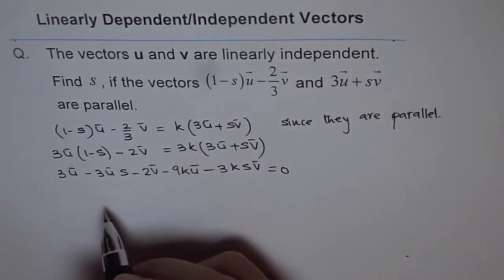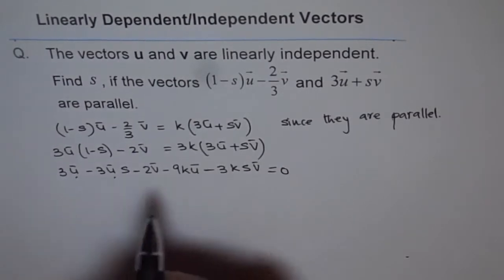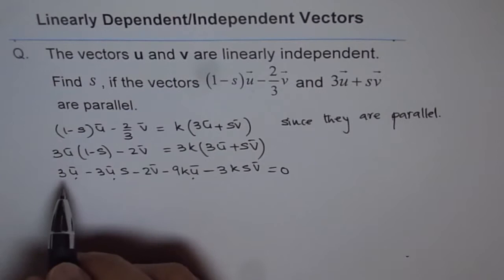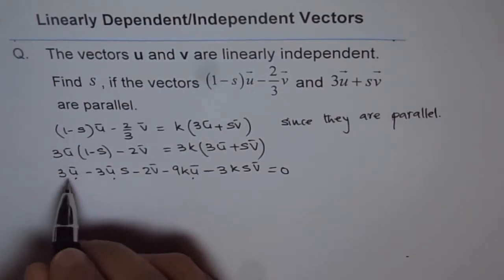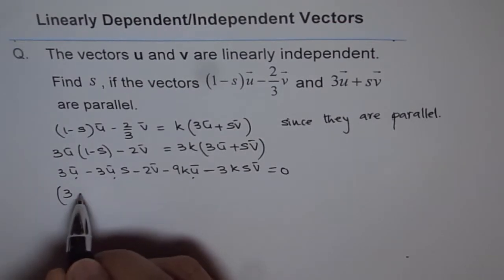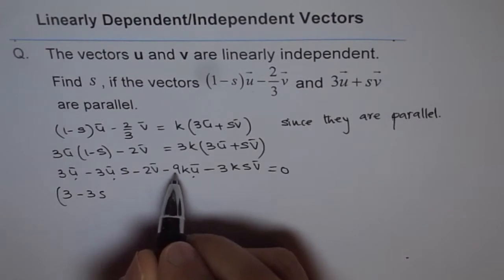And now, we can combine the terms, taking what are the coefficients of u. So, we have 3 terms with u here and their coefficient is 3. And here the coefficient is minus 3s. And here the coefficient is minus 9k times u.